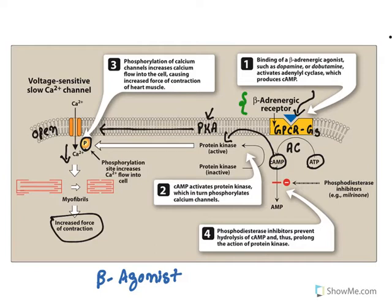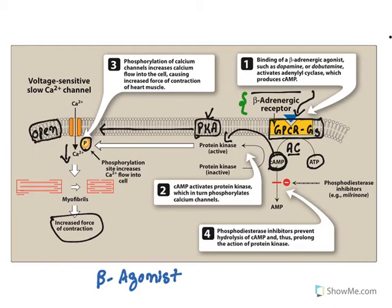To summarize: beta adrenergic agonists bind to the Gs-type G protein-coupled receptor, activate adenylyl cyclase, which increases cyclic AMP levels, which activates protein kinase A, which phosphorylates the calcium channel. Phosphorylation opens the calcium channel, increases calcium entry into the heart, and this calcium binds with myofibrils and increases force of contraction.